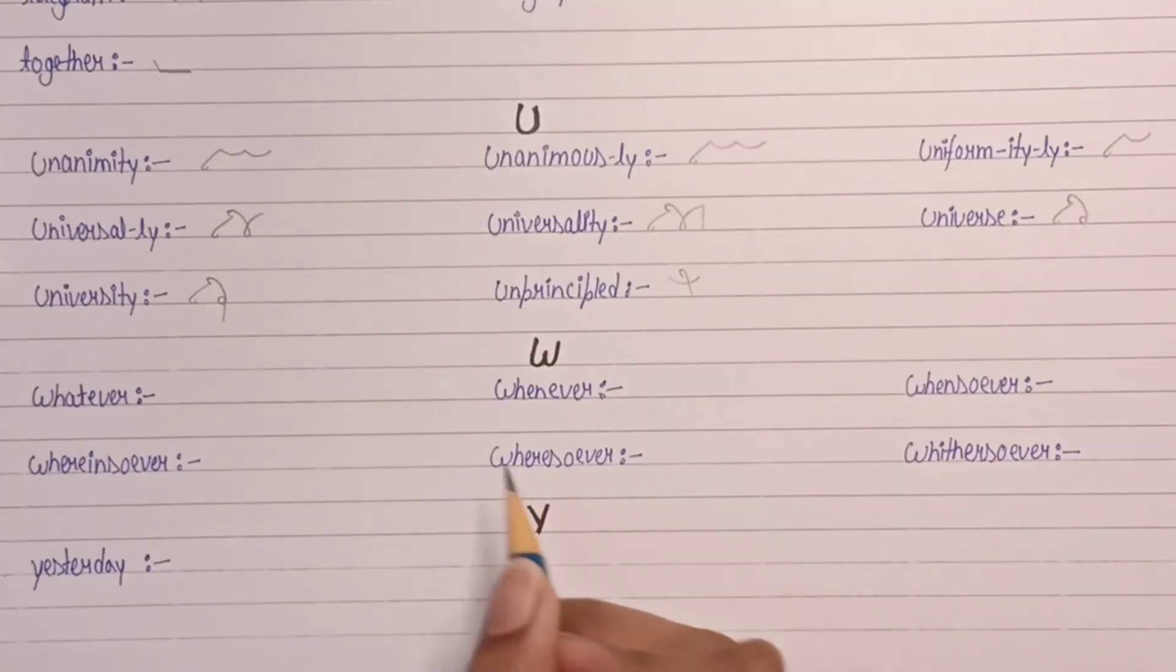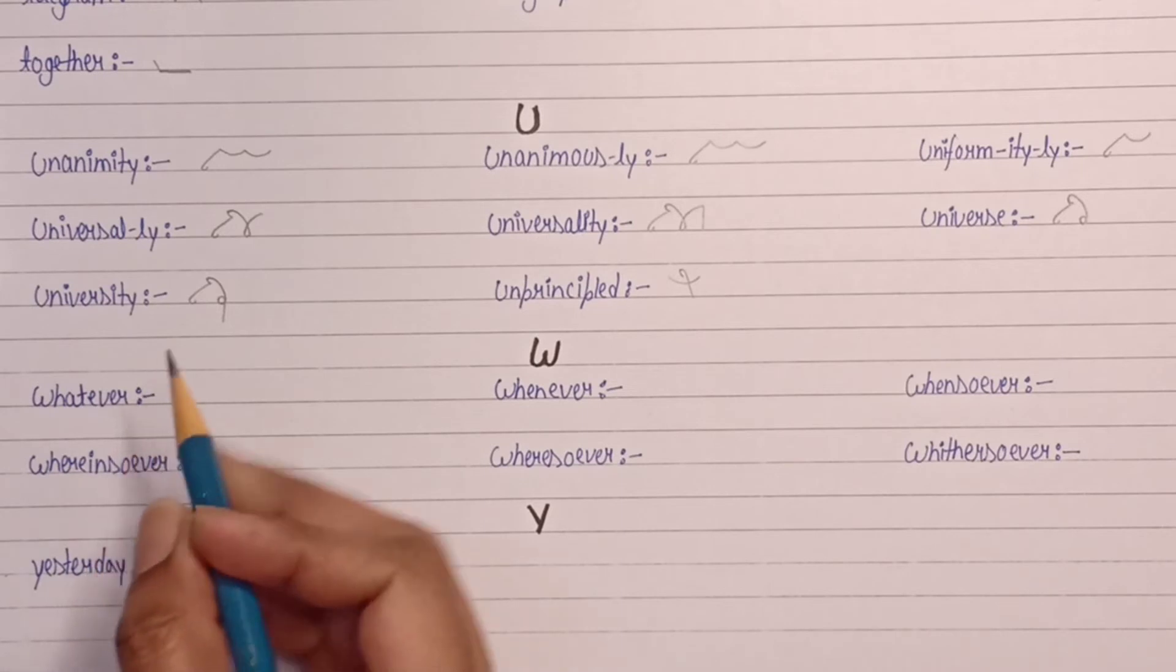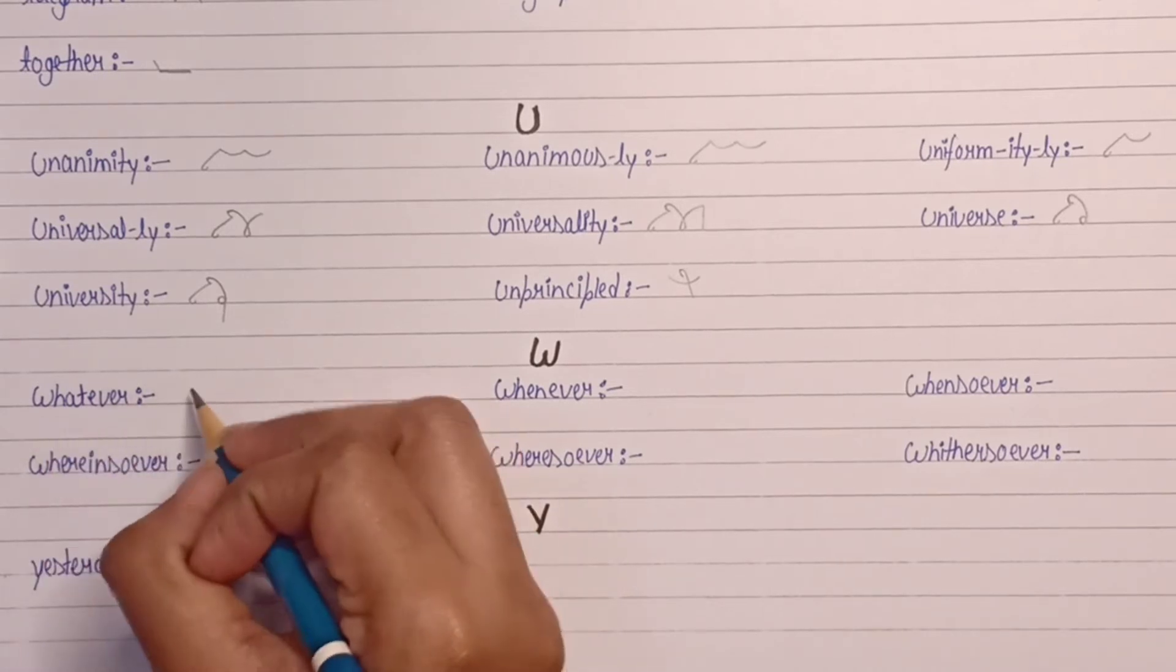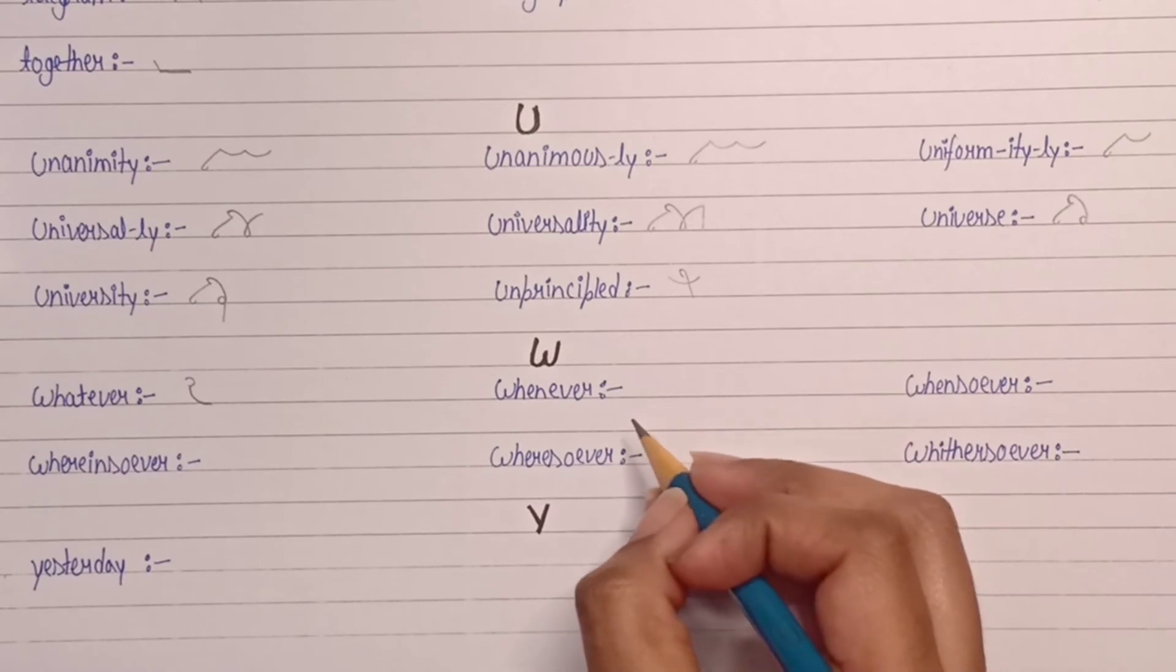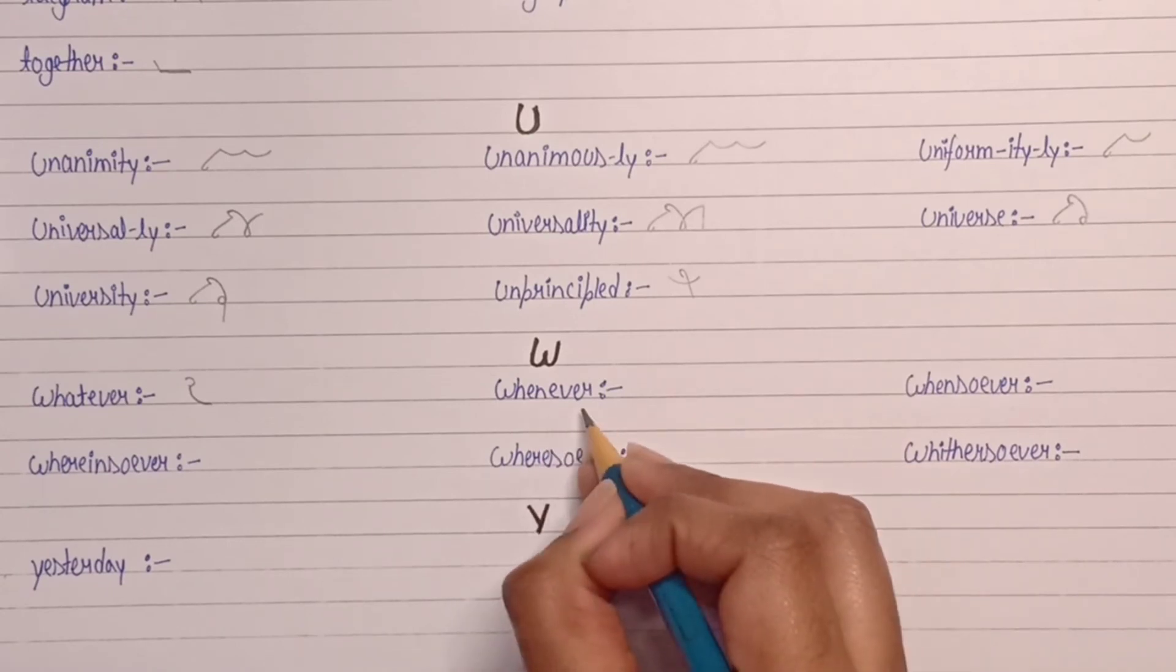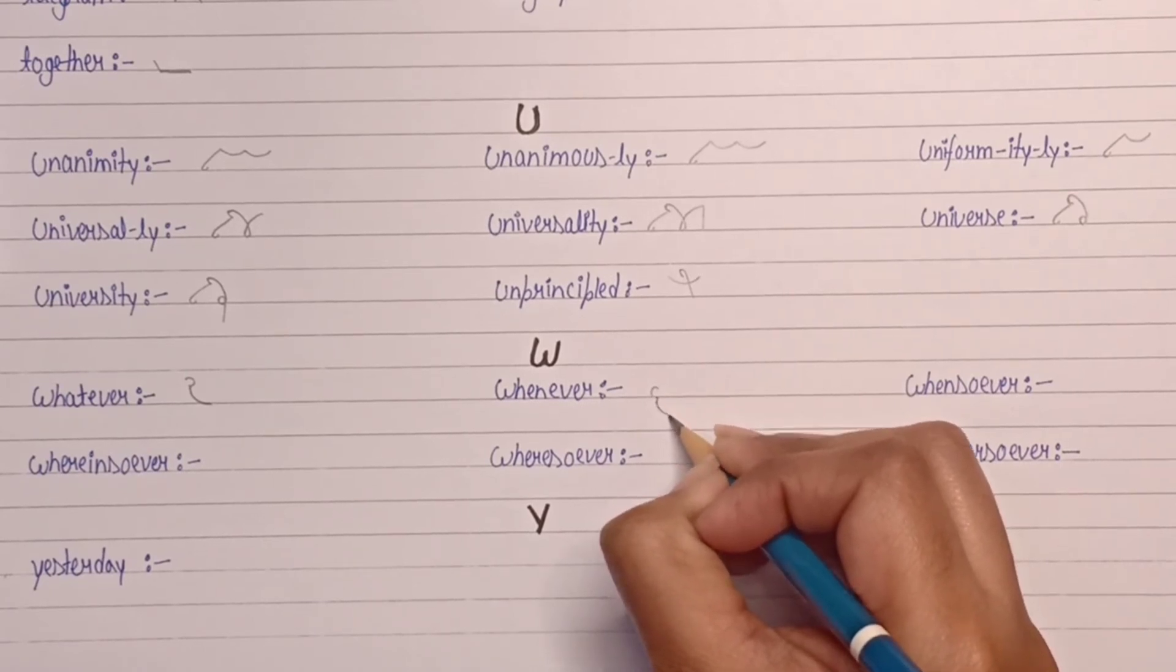Next alphabet is W. First word is whatever. For word we use the short form, and for ever we only use the V: whatever. Next is whenever, same here - short form of when and for ever, V.